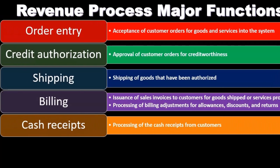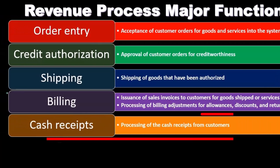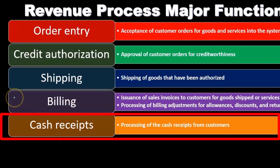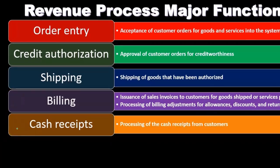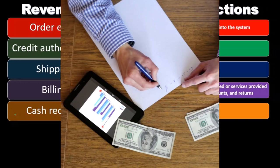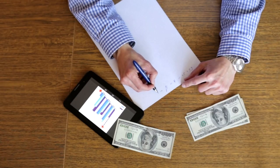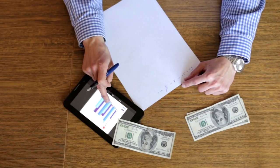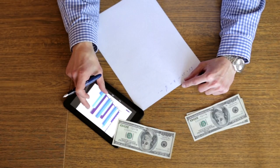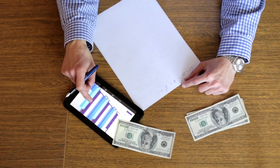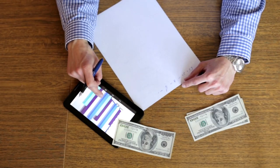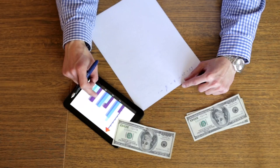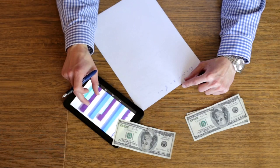And then of course we have the cash receipts. Once we have sent the bill out, we expect to receive cash — cash being received in the mail that has been billed for previously. Processing of cash receipts from the customer will then happen.